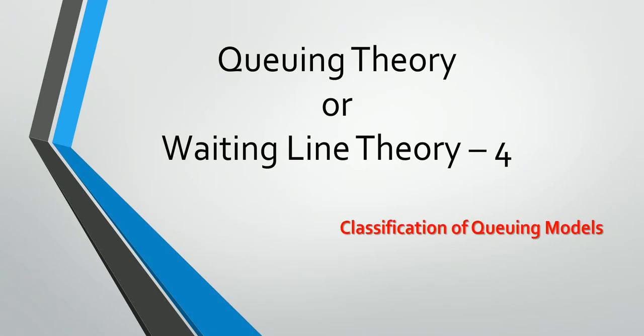Hello everyone, welcome to the fourth part of the chapter on queuing theory or waiting line theory. In this part, we are going to learn about the classification of queuing models. Queuing models are classified into 12 types — let us see what the 12 types are and how they represent queuing models.